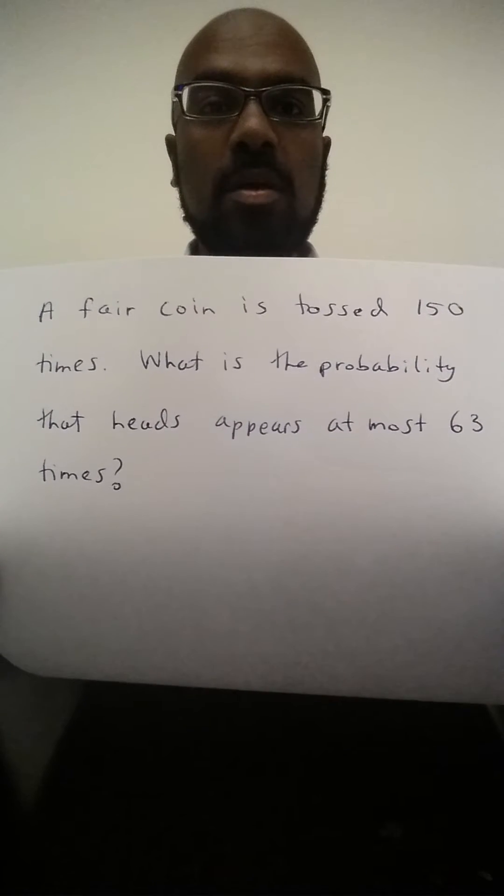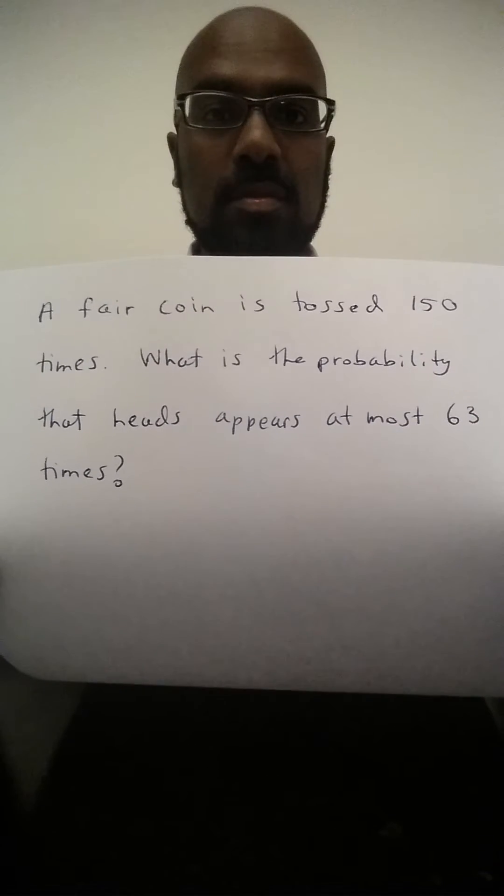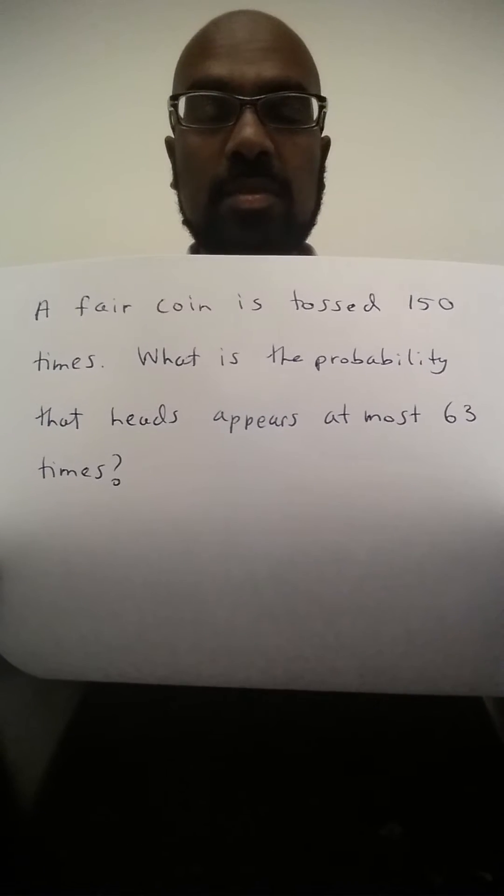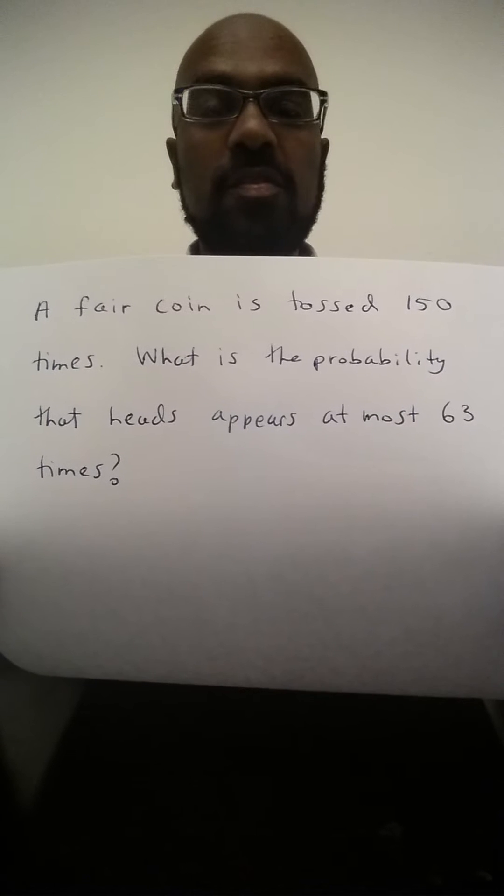So how would we get an exact formula? Well first, let's count the number of outcomes that are possible in this experiment. So a fair coin has two sides, we flip it 150 times, and so the total number of possible outcomes is 2 to the 150th power.